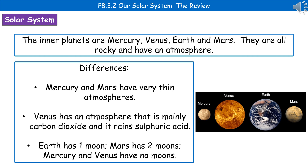Our solar system can actually be broken up into the inner planets and the outer planets. If we consider the inner planets first of all, we've got four of them: Mercury, Venus, Earth, and Mars.